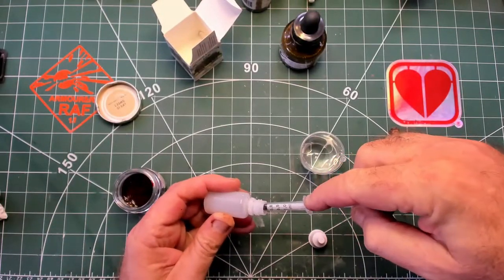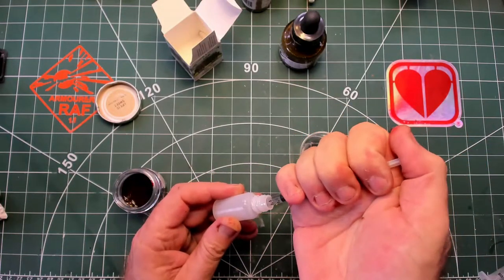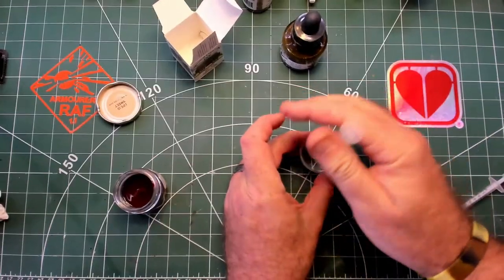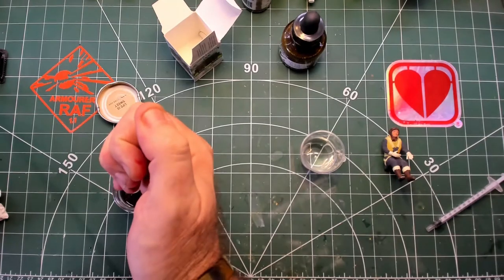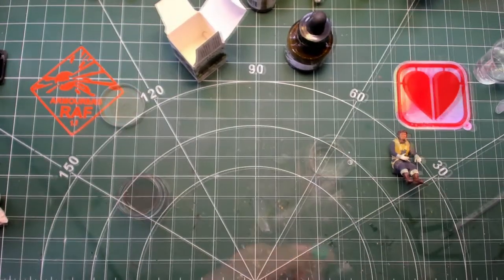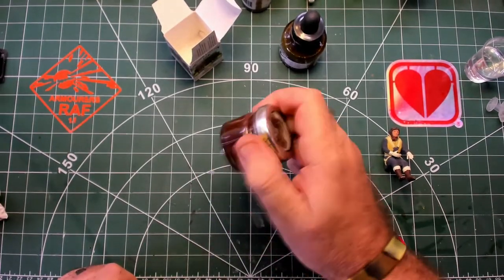Now we can add a few drops of flow aid. I added about a mil of flow aid here. Next we can top the jar off with distilled water, then give it a good old shake.